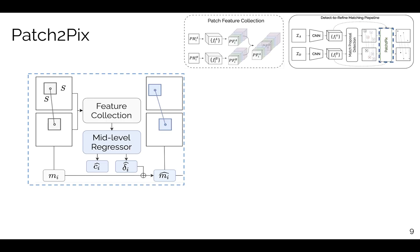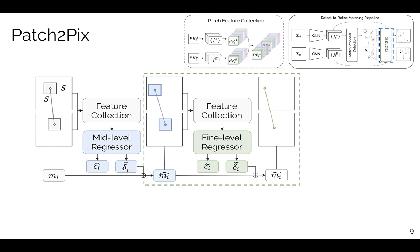Patch2Pix performs two levels of search refinements to progressively expand the local searching space for pixel matches. The output of the first refinement serves as the input proposal for next level of refinement.